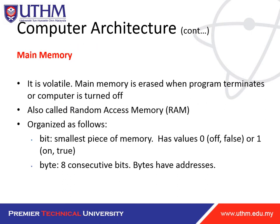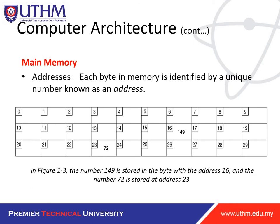Memory is very volatile. Memory is erased when the program terminates or the computer is turned off. It is also called random access memory — RAM. It is organized by bits or bytes. Bits are the smallest piece of memory, with a value of zero (false) or one (true). Bytes are eight consecutive bits and have addresses. Each byte in memory is identified by a unique number known as an address.